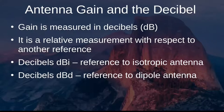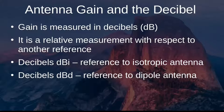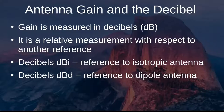Antenna gain is measured in decibels. It is a relative measure with respect to a reference. There are two reference types: dBi, which is decibels relative to an isotropic antenna, and dBd, which is relative to a dipole antenna. When discussing gain relative to an isotropic antenna, we use dBi; when relative to a dipole, we use dBd.